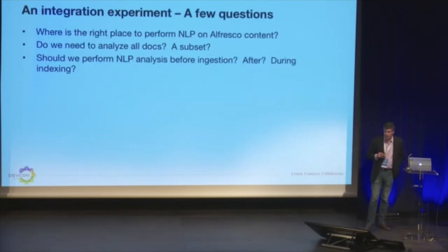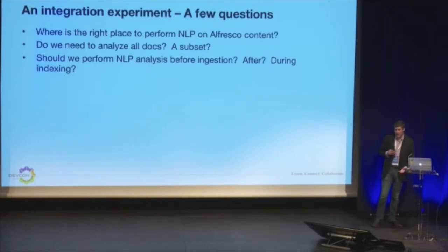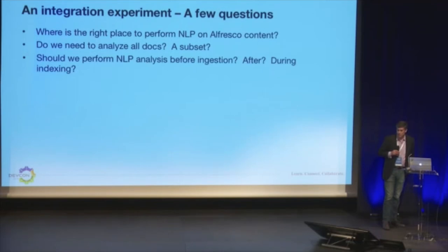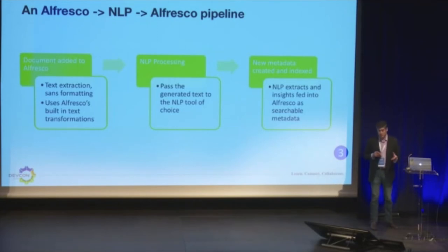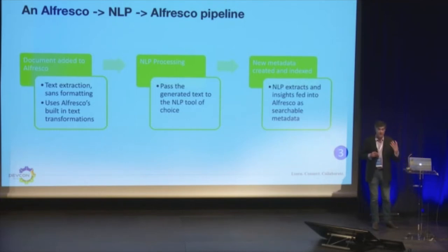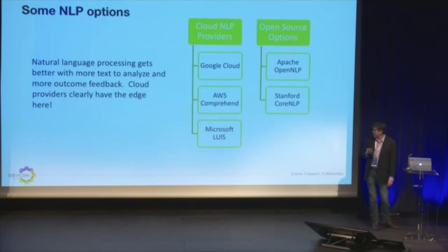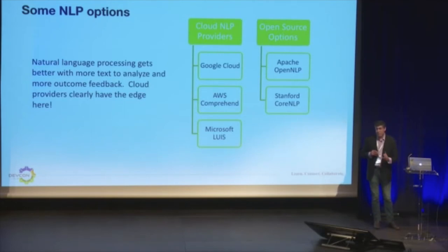I decided to do a little integration experiment and asked a few questions: what's the right place to perform NLP on content stored in the repo? What do we need to analyze? Should we do NLP before we ingest or as part of the indexing process? I didn't want to make major changes to my Alfresco instance, so I settled on a simple pipeline: document comes in, we use Alfresco's text extraction to pull the text out, pass it to an NLP tool, and use what the NLP tool extracts to create additional metadata to decorate our documents. I explored a bunch of different providers, both cloud and open source. The more text you have to analyze the better it gets, so cloud has a clear advantage there.